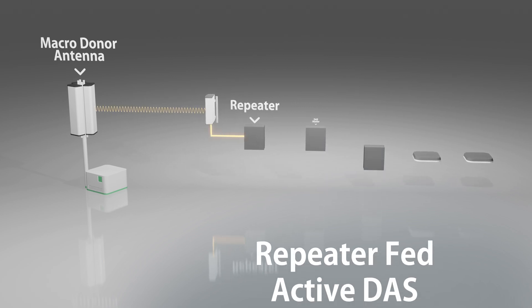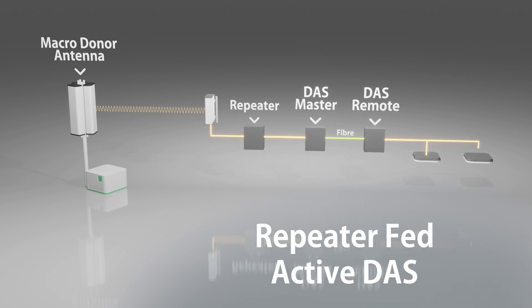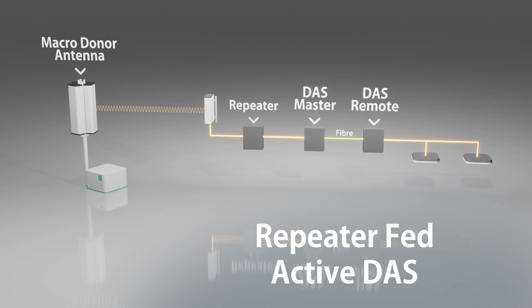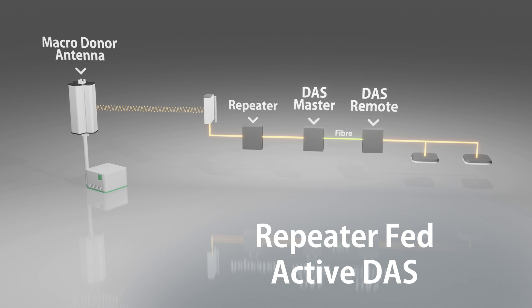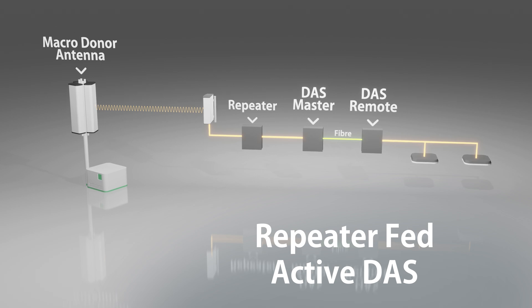We also have active DAS and there are a number of additional components. We've got a DAS master which will convert that RF signal into a digital signal. We've got a DAS remote which may be where we're looking to extend coverage maybe into another building or in the case of an outdoor deployment across a wider area and this would take the form of an optical fiber link.